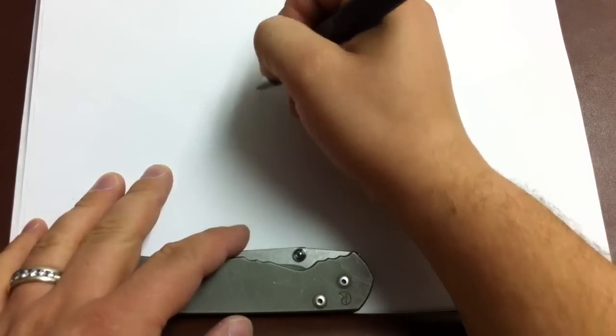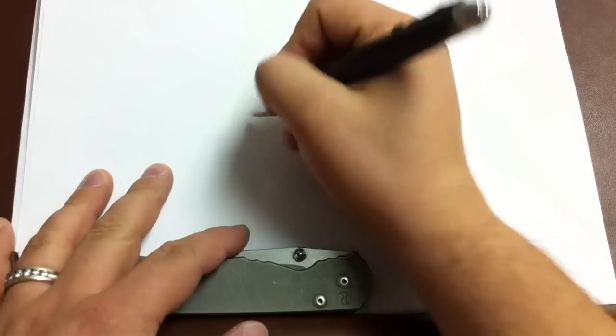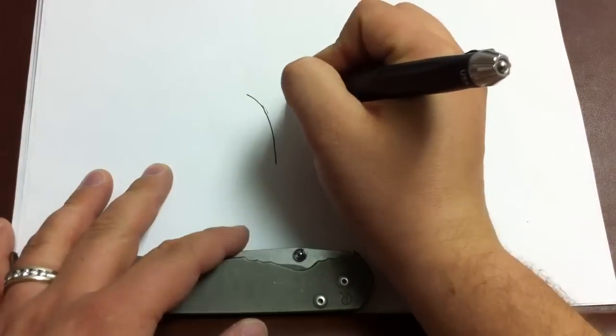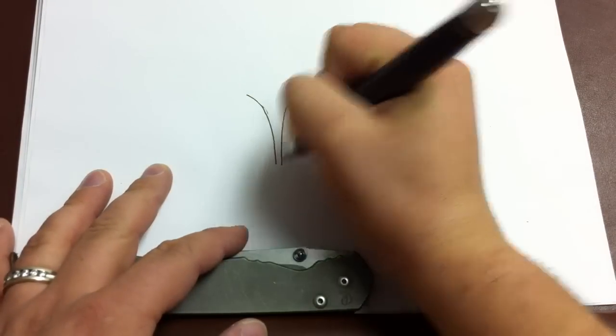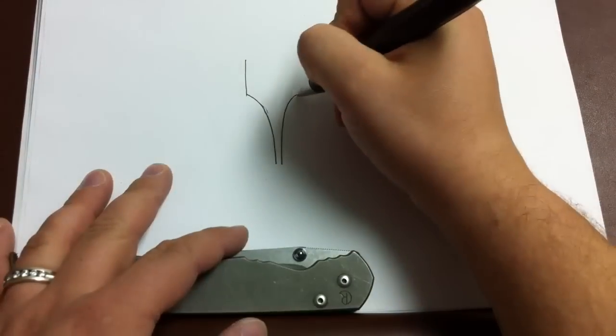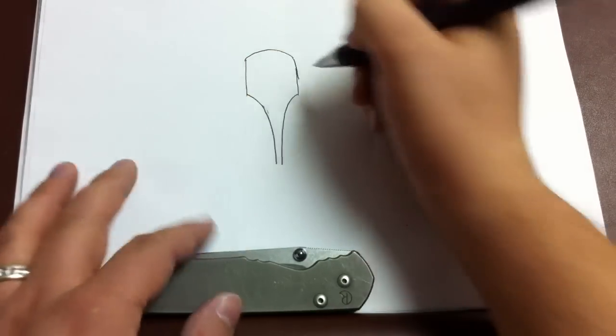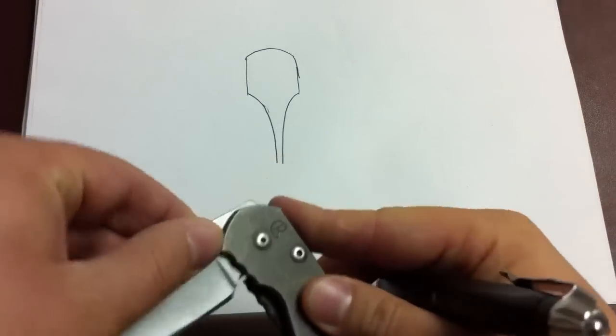Now you're going to have to pardon me, I really can't draw, but reaching over the camera and everything is going to be hard. But convex edge, so Sebenza is a hollow ground blade, so this is going to be real exaggerated.